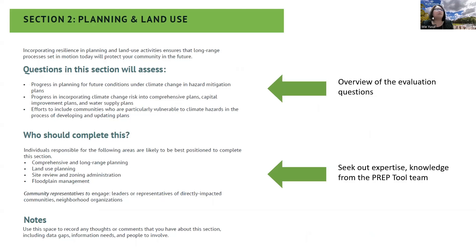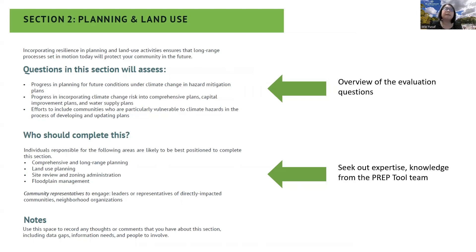This is just a snippet of what the PREP tool's evaluation section looks like. This is the section for planning and land use, and what you can see is it starts with a big picture overview of what kinds of evaluation questions are in the section — really intended to give you a flavor of what this particular section would focus on and help you figure out who you need to pull from your team to complete the evaluation. For planning and land use, that would include individuals responsible for comprehensive and long-range planning, land use planning, floodplain management, or site review and zoning administrators.